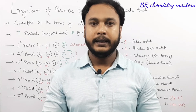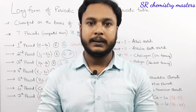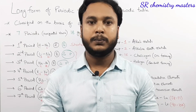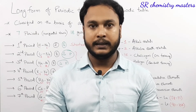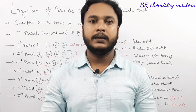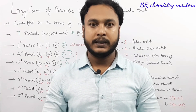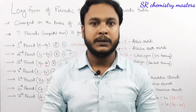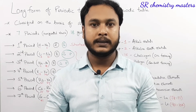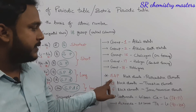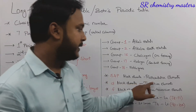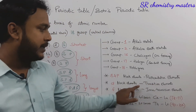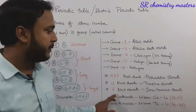Noble gases are not readily taking part in chemical reactions, and most of the elements of this group are inert in nature. But nowadays we are seeing compounds of xenon, as xenon has ionization potential similar to that of oxygen. The s and p block elements are considered as representative elements, whereas d block elements are considered as transition elements.